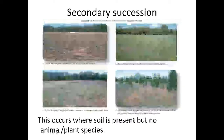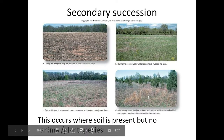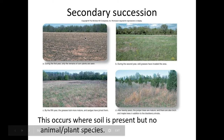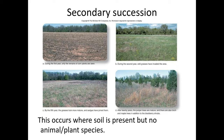Secondary succession, however, occurs where we already have soil present but no animal or plant species. So after maybe harvesting of crops, or it might be a forest fire, or it might be deforestation — you remove the plants or crops from the area and over time it would develop again into that climax community. So soil is already present in secondary succession.